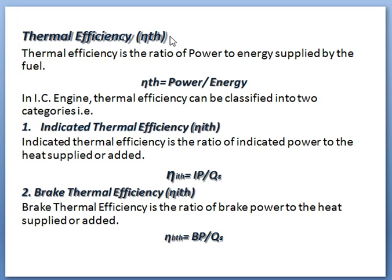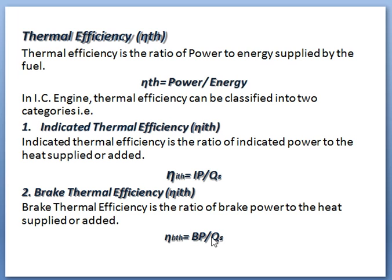Thermal efficiency, eta TH — thermal efficiency is the ratio of power to energy supplied by the fuel, that is eta TH equals power divided by energy. In IC engines, thermal efficiency can be classified into two categories: indicated thermal efficiency and brake thermal efficiency. Indicated thermal efficiency, denoted by eta suffix ITH, is the ratio of indicated power to the heat supplied or added, so eta ITH equals IP divided by Q suffix S. Brake thermal efficiency is the ratio of brake power to the heat supplied or added, equal to BP divided by QS.